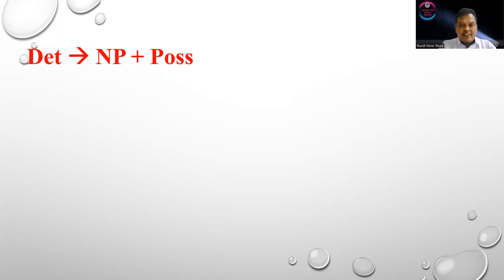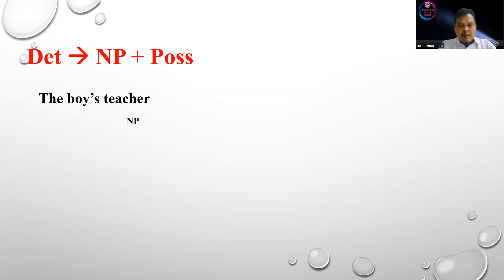Now let's see the first example: 'the boy's teacher.' This is a phrase that contains a possessive noun phrase. Because the object of analysis is a noun phrase, the head here is NP. The noun phrase branches into two constituents, and the structure is determiner plus noun.